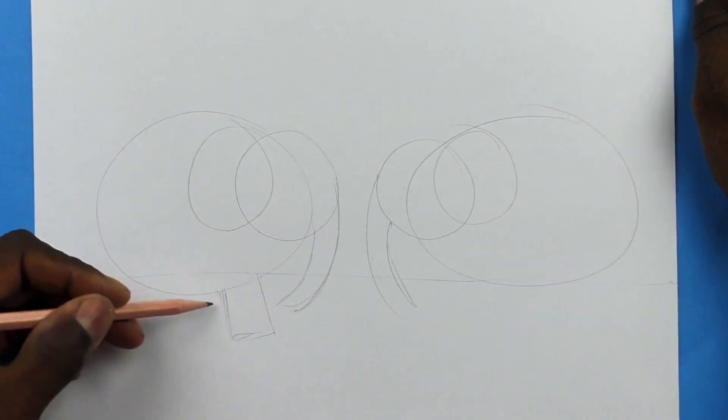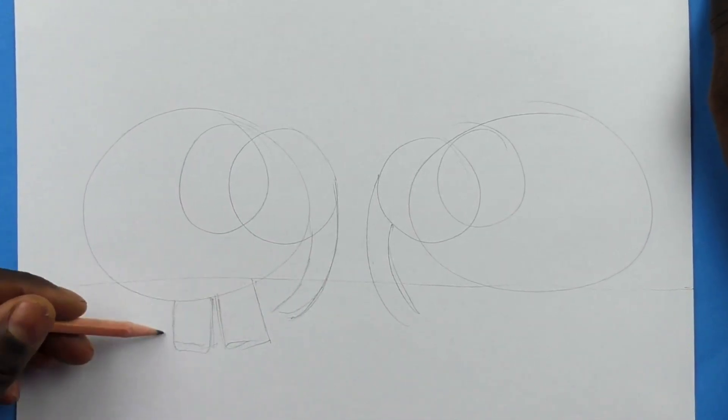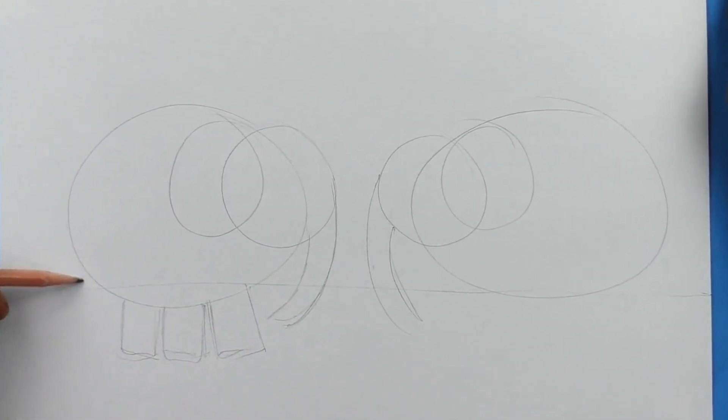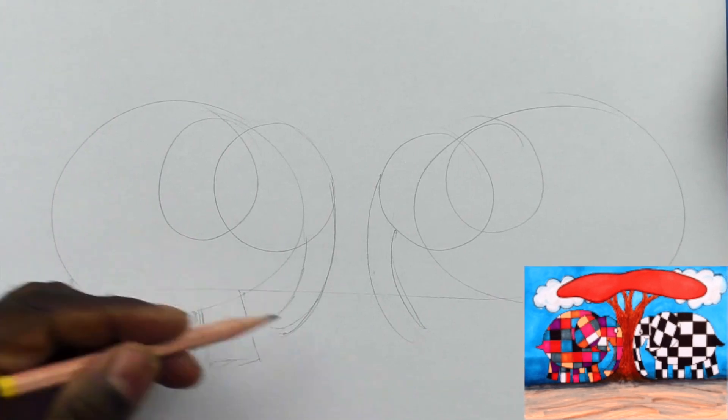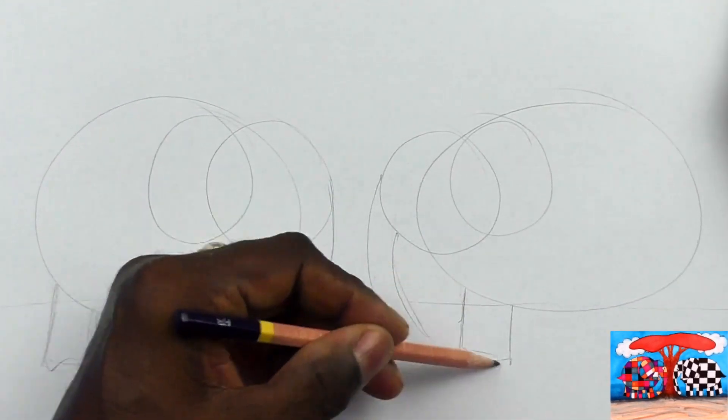And now I'm going to make four rectangles coming out of the body for each of them, for Elmer and for Wilbur.